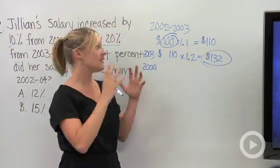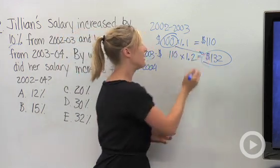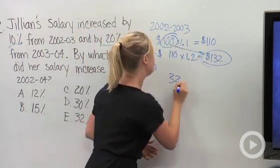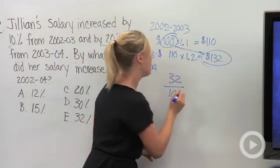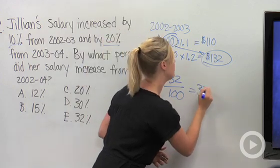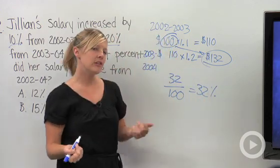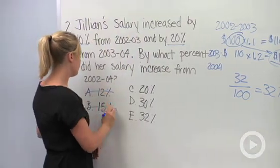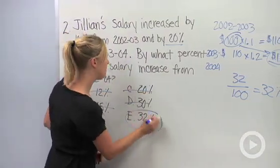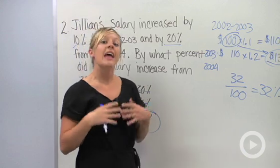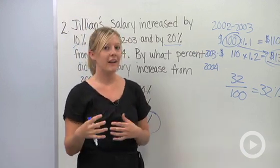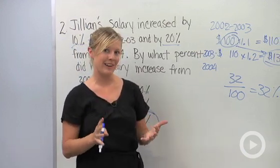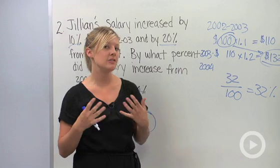So she started with $100 and then she ended in 2004 with $132. Well, knowing that 100 is the base and that it increased by 32, an increase of 32 over the base of 100 is actually 32%. Let's take a look at our answer choices and see if this makes sense. Well, we've got 12%, 15, 20, 30, and 32, which is an answer choice. If you wanted to, you could go back and plug it in and check your work. It's highly recommended on the PSAT and the SAT to do stuff like this.